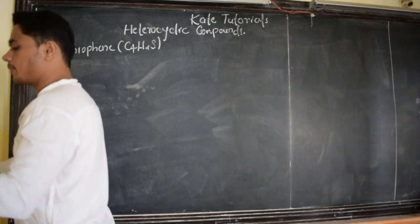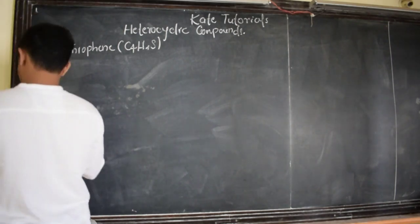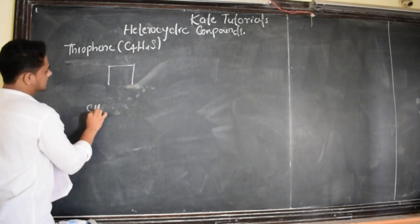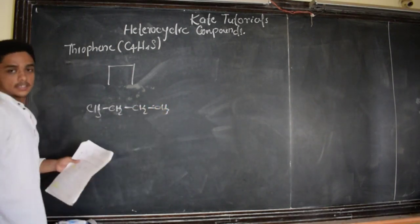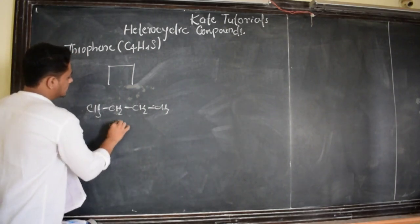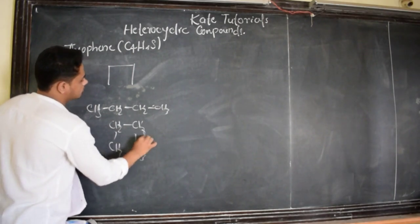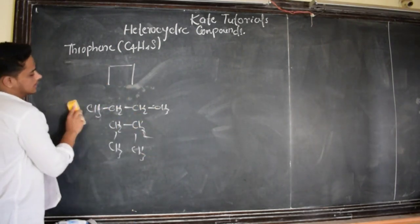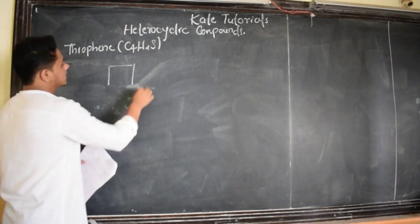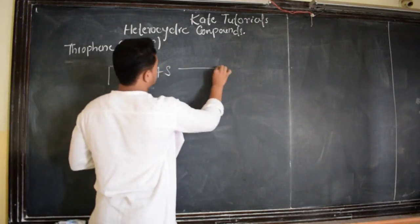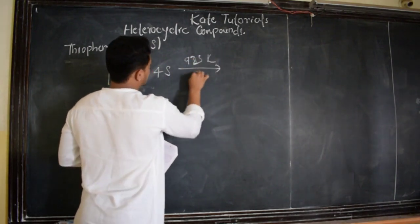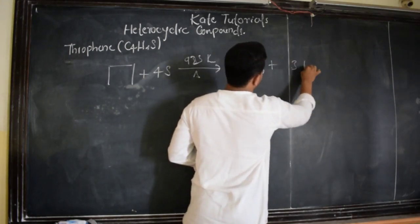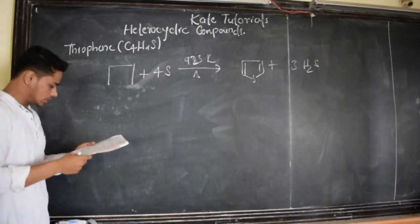Now we shall discuss a few preparations — how to prepare thiophene. From n-butane we can prepare thiophene. n-Butane is CH3–CH2–CH2–CH3. When treated with four molecules of sulfur (S4) at 923 Kelvin, we get thiophene along with three moles of H2 gas. This is one method of preparation of thiophene from n-butane.